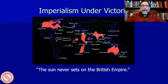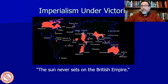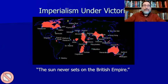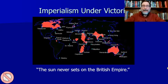There's a world map, and everything in red was part of the British Empire at the time. This tiny little island in Europe at one point controlled all of this. Look at Canada — how huge that is. It wasn't until 1867, two years after the American Civil War, that Canada was given its independence.